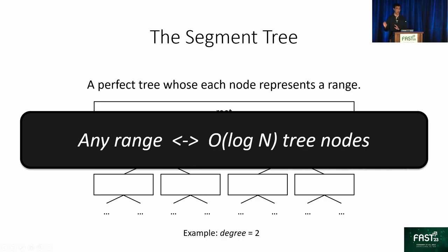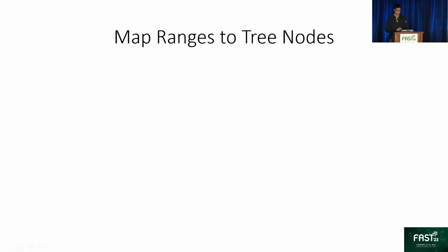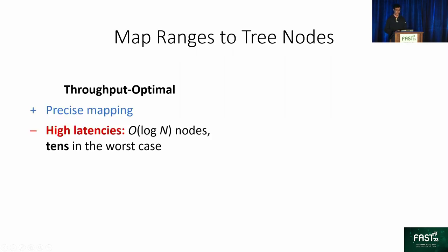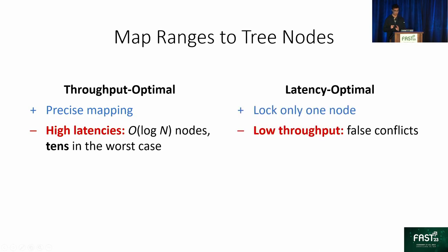Note that to lock a node, we do not necessarily need to lock all nodes whose range overlaps with it — we just need to lock the node itself. However, we still face similar problems to the trivial one-sided solutions. If we map the range precisely, we get a throughput-optimal solution, but with the obvious drawback of locking many nodes for a range, incurring high latencies. Conversely, we can lock only one node that covers the requested range: latency becomes low, but so does throughput because there are false lock conflicts.